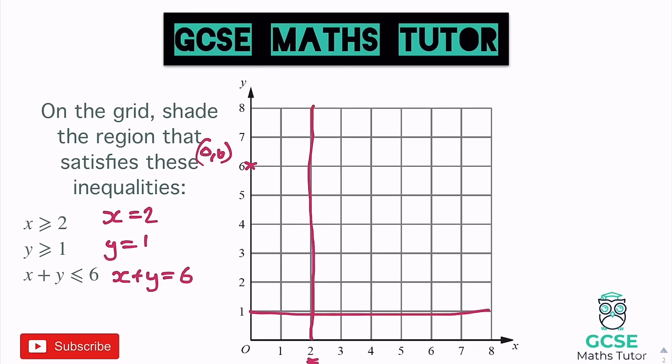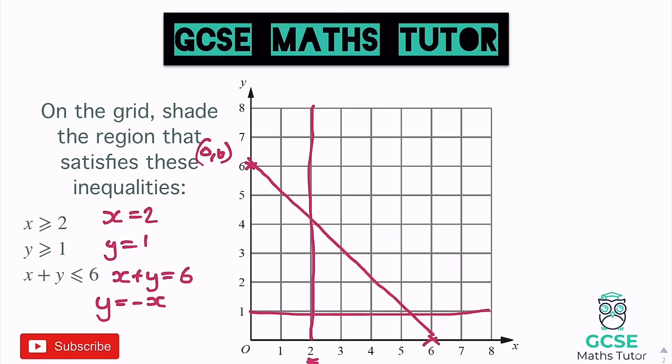For x plus y equals 6: when x is 0, y has to be 6, and when y is 0, x has to be 6. So it's a nice line connecting those two coordinates (0, 6) and (6, 0). You could also rearrange it to y equals negative x plus 6, giving a gradient of negative 1 and a y-intercept of 6. Now we've got all three lines drawn.